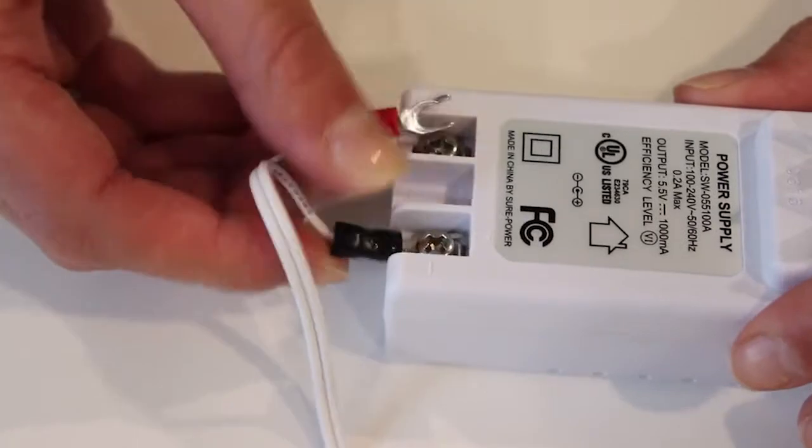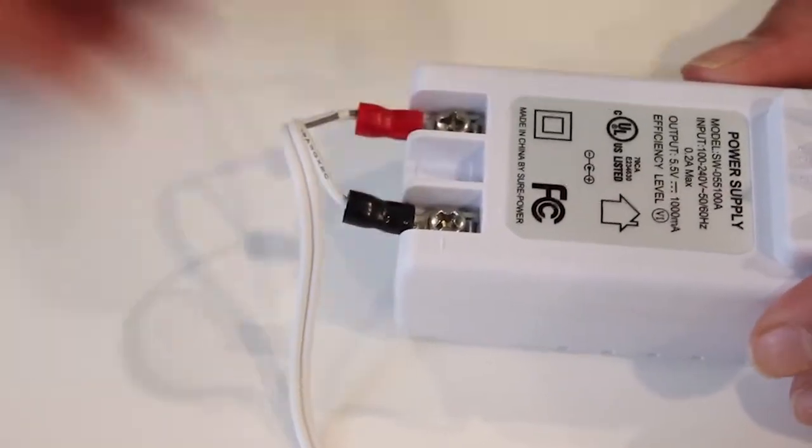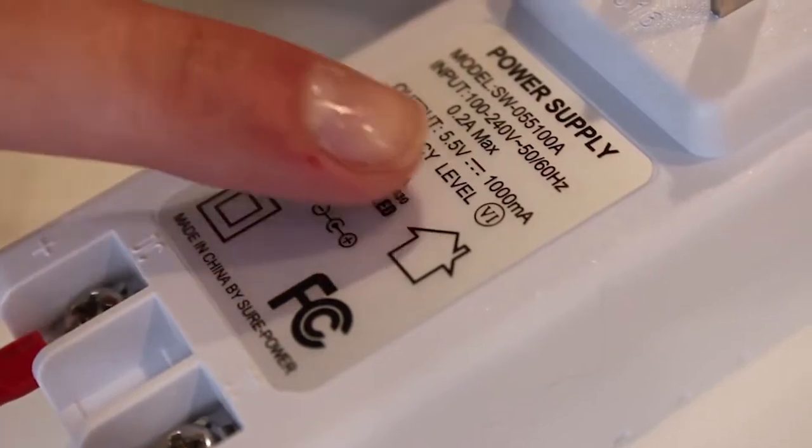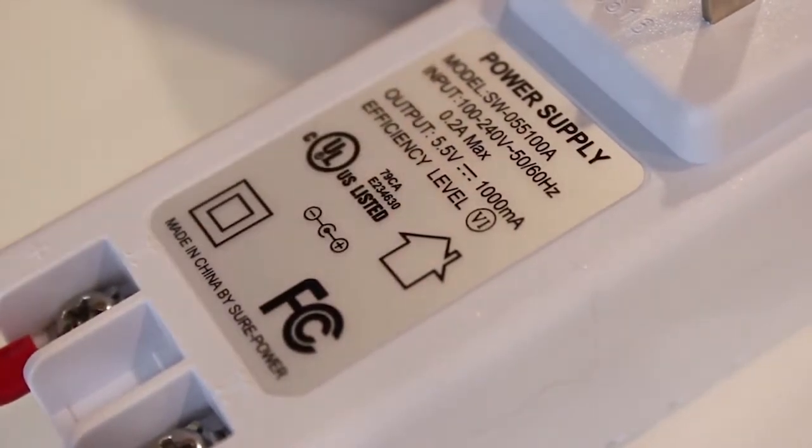After you've connected the wire to the panel, it's time to wire up the transformer. Make sure to only use the included 5.5 volt DC power supply. Using a different power supply could result in permanent damage.